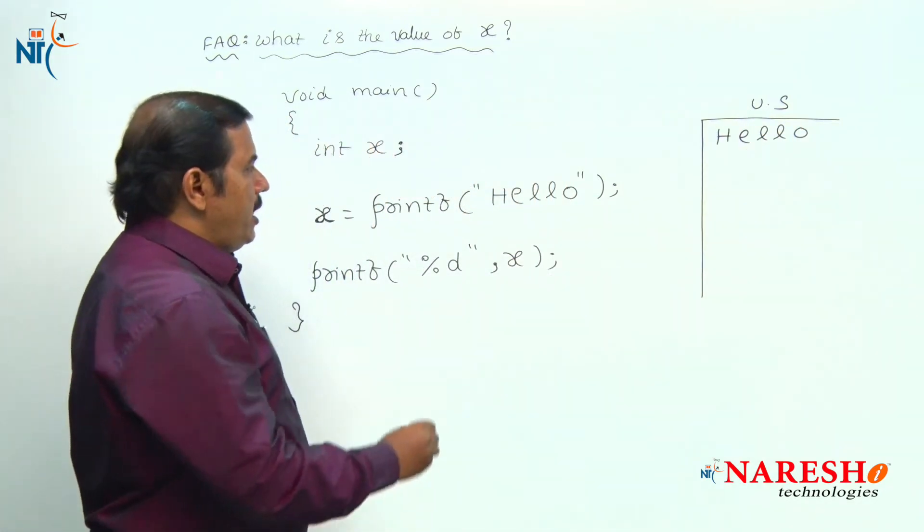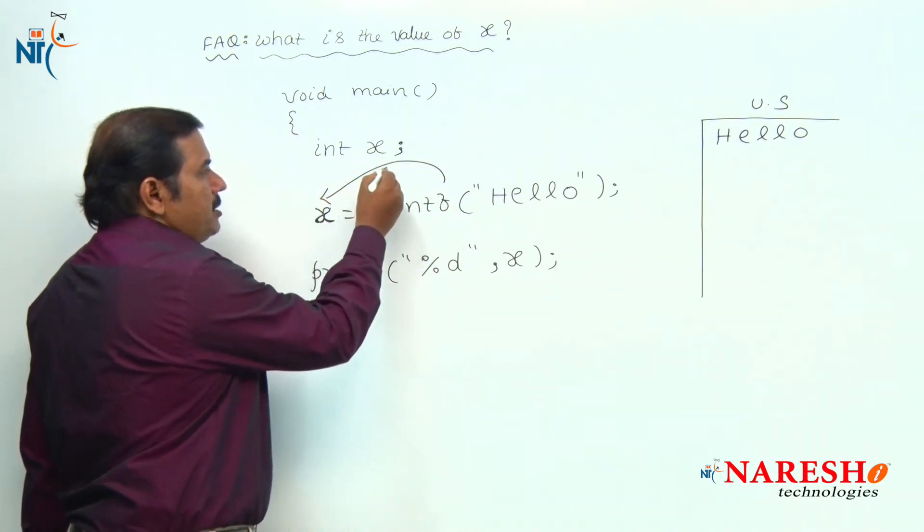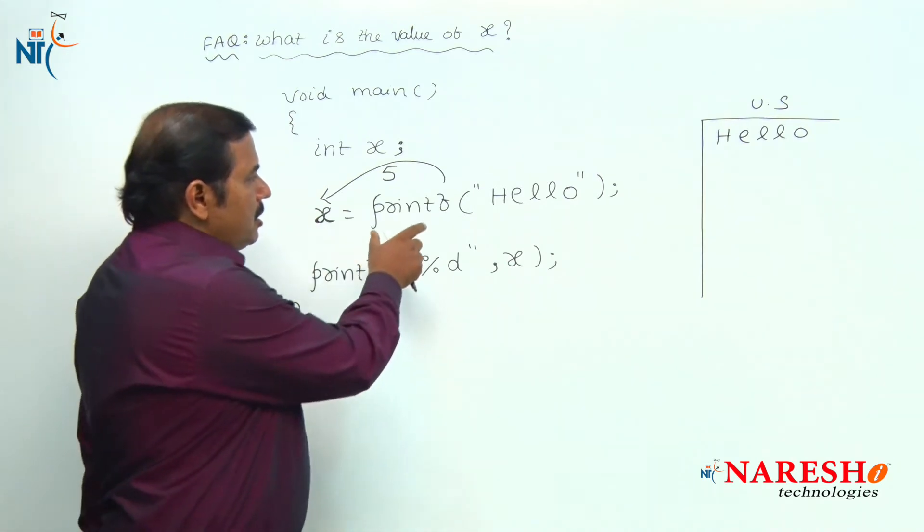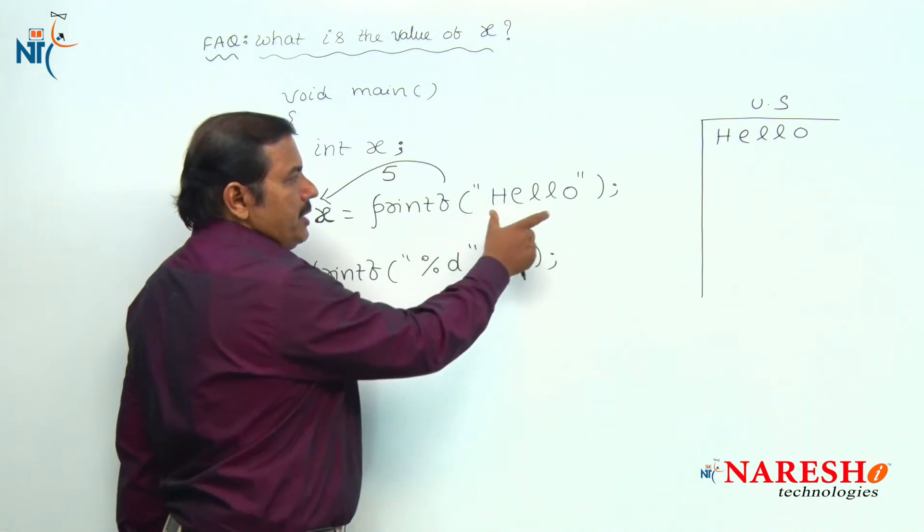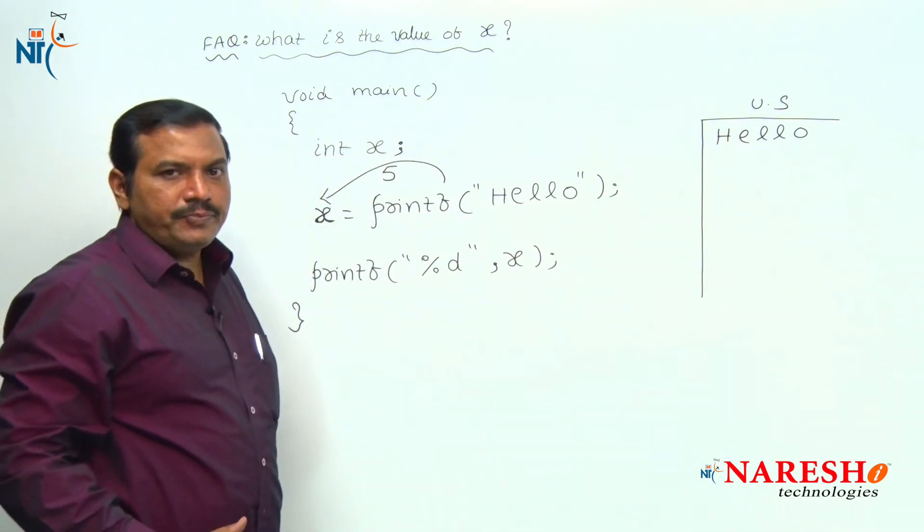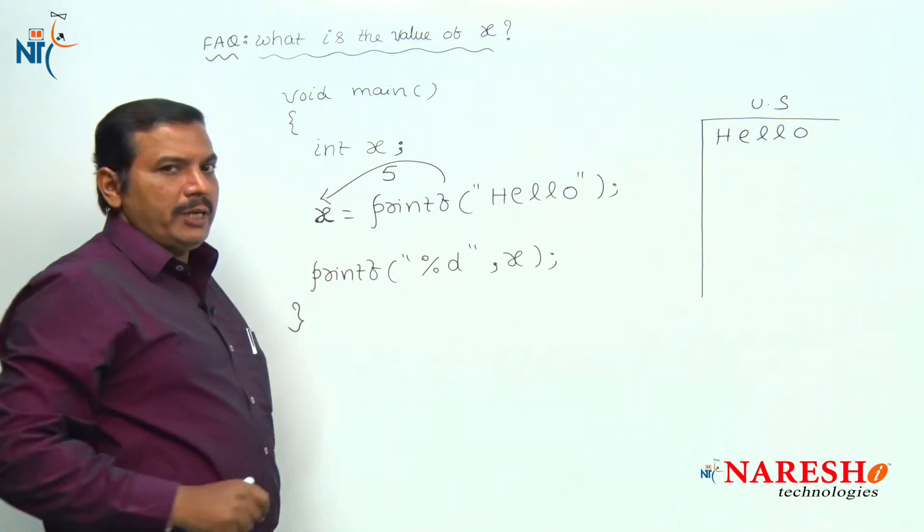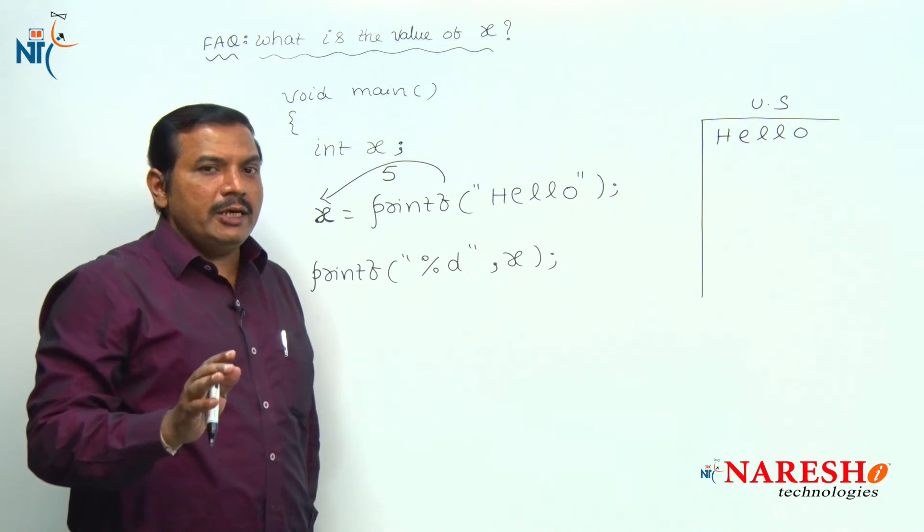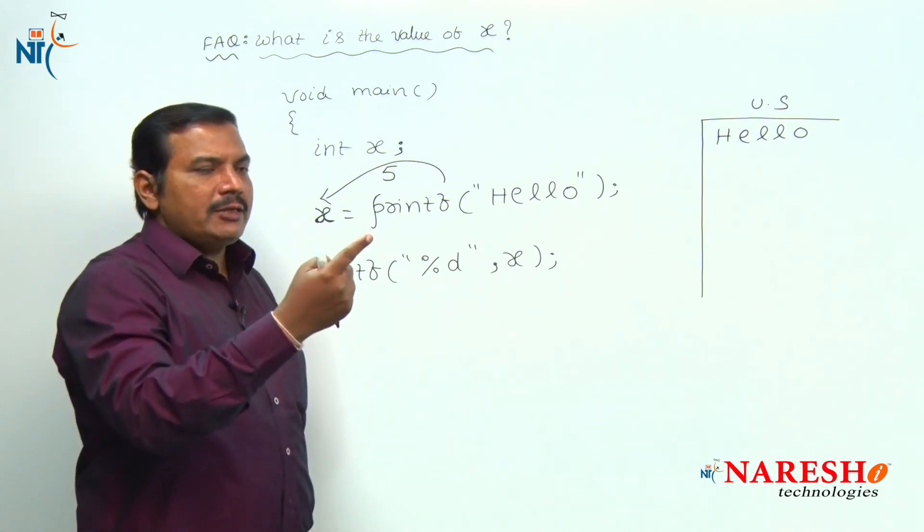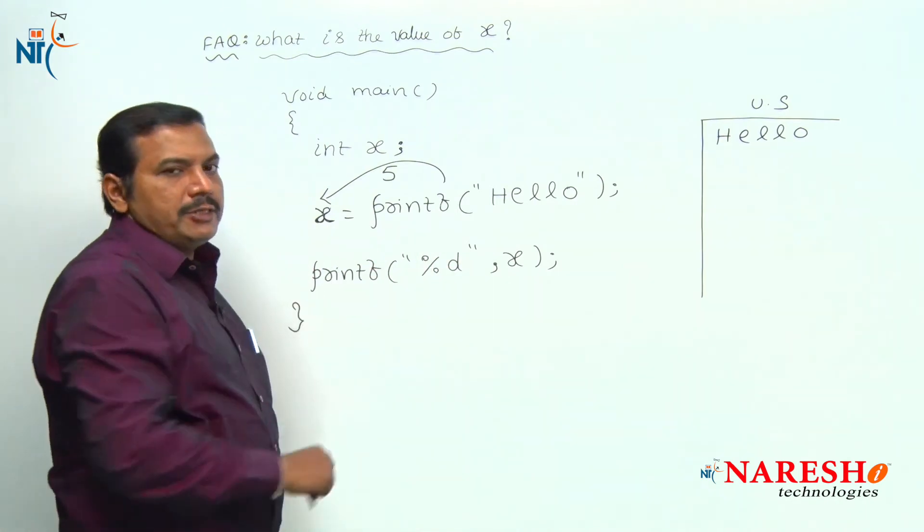As well as the printf function returns an integer value 5 into variable x, because the printf function is printing five number of characters onto the screen. That is the reason the printf function returns five into variable x. The printf function returns the total number of characters it is printing onto the screen into the variable x.